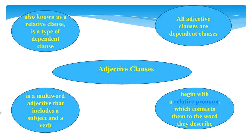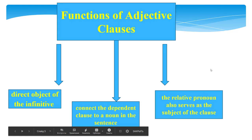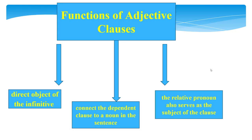Each adjective clause also contains a subject and a verb, all of which work together to describe the original noun being modified. For example, the clause 'which many people adore' contains the subject 'people' and the verb 'adore.' Yet by itself, it is not a complete sentence. Instead, its job is to provide more information to describe the noun 'chocolate.' In some cases, the relative pronoun also serves as the subject of the clause. For example, in the adjective clause 'who are smart,' the relative pronoun 'who' also acts as the subject.